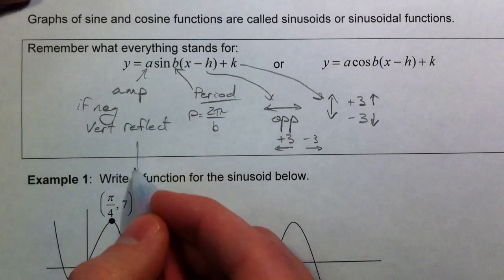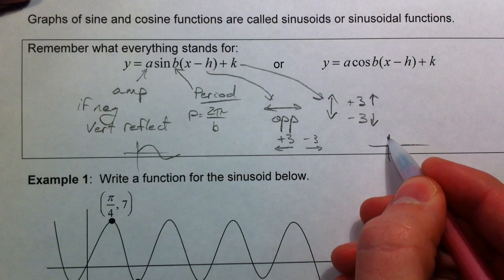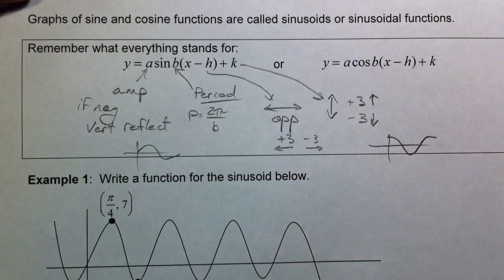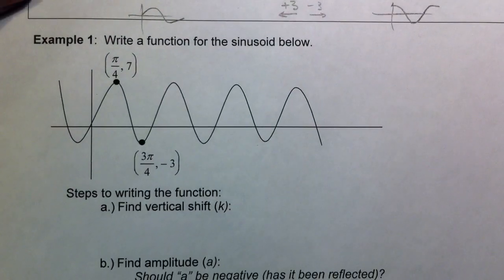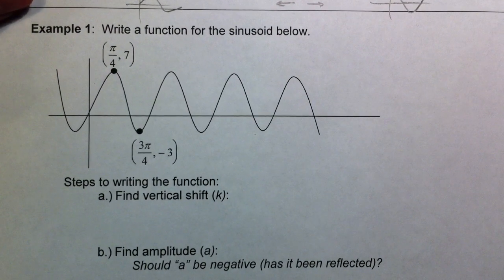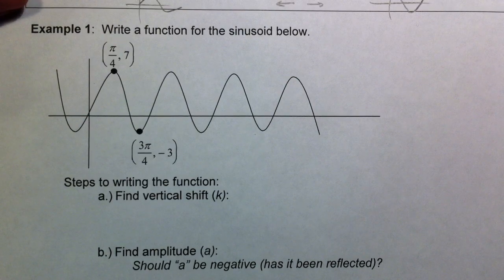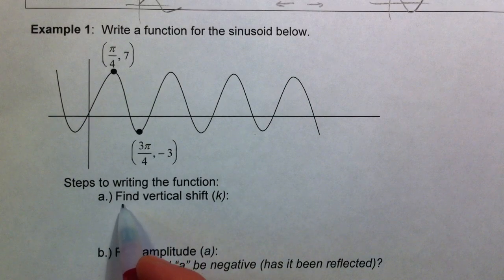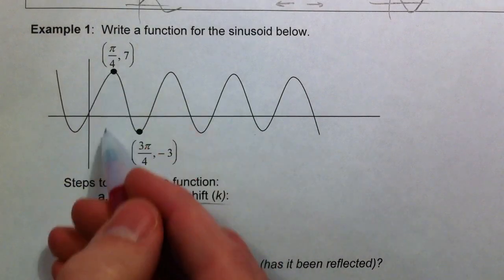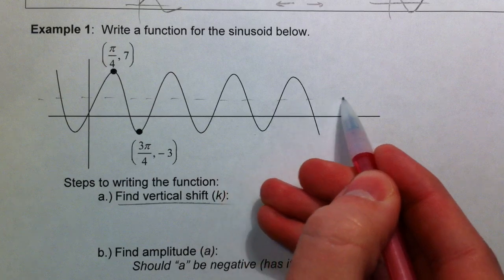The sine function starts in the middle and goes up; the cosine function starts at the peak and returns to the peak. We need to write a function — we're going to split it up into several steps. You don't have to do all of these at the same time or in this particular order; it's just one way of doing it. One of the first things you want to figure out is the vertical shift.